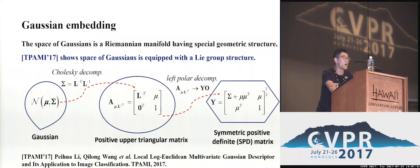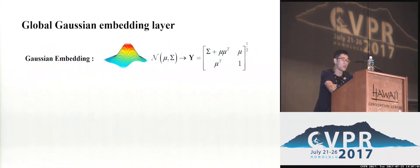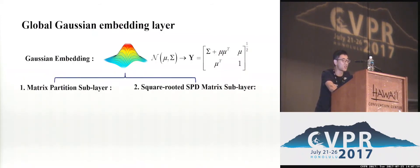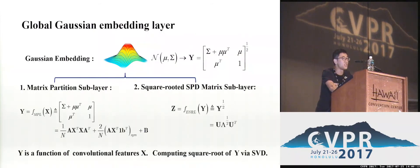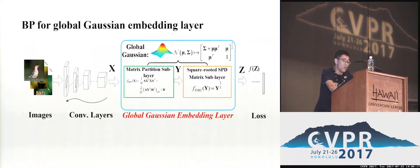So we can represent a Gaussian with a square-rooted SPD matrix Y, which compactly encodes the mean and covariance matrix of the Gaussian. By using this embedding method, we can construct our global Gaussian embedding layer with two sub-layers. The first is the matrix construction sub-layer, with which we can write the Gaussian embedding matrix Y as a function of the convolutional features X. The second sub-layer computes the square root of matrix Y via SVD. With such processing, we can realize the forward propagation for our network.